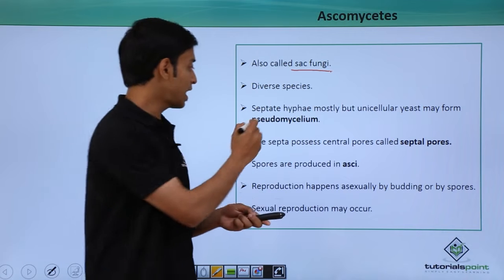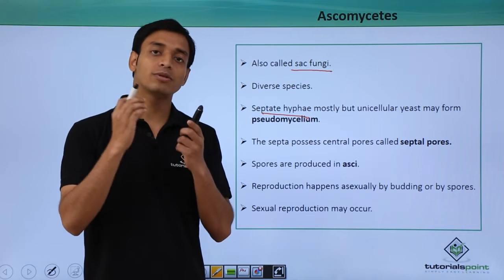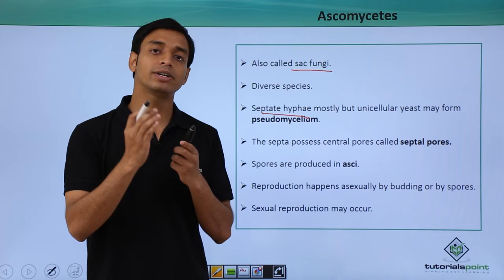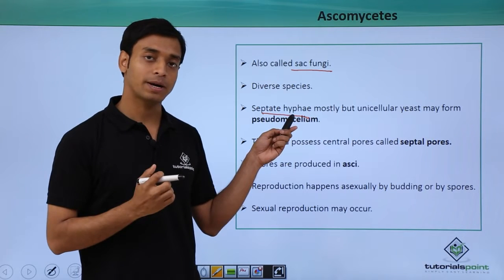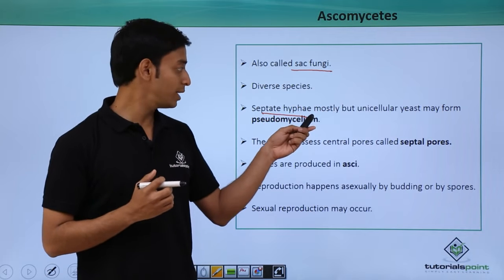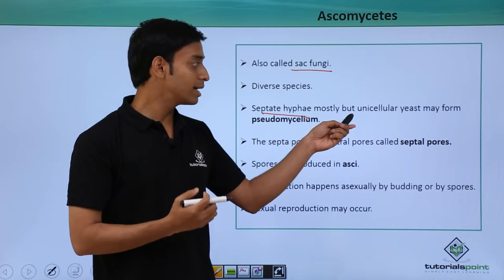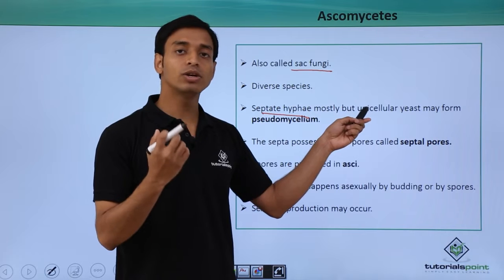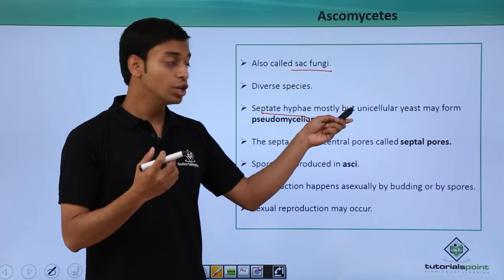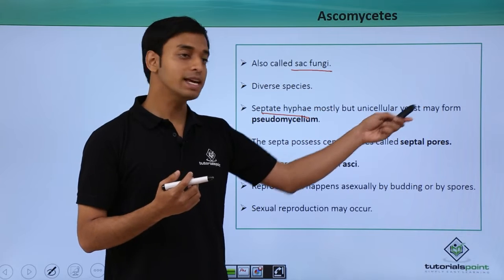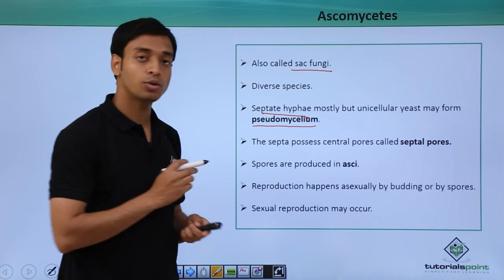They have septate hyphae, meaning the protoplasm of the hyphae is separated by certain structures known as the septum or septa. They mostly have septate hyphae, but unicellular yeast, as we know, are unicellular in structure.